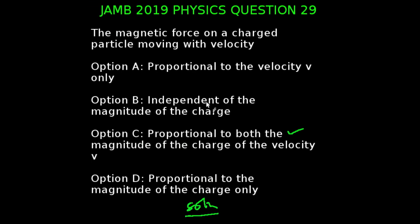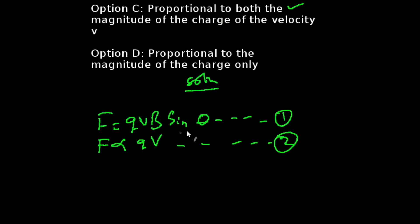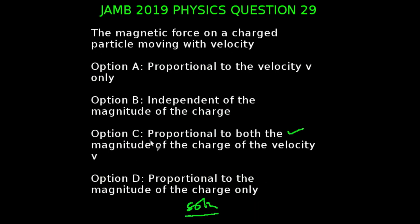Question 29 of the JAMB 2019 physics examination. The magnetic force on a charged particle moving with velocity is proportional to... The correct answer to this option is option C. It is proportional to both the magnitude of the charge and the velocity V. We can see from equation 1 that our force is proportional to our charge, velocity, and magnetic strength. And in equation 2, we have our force to be proportional to the charge and the velocity. So this corresponds to our option C, which is the force is proportional to both the magnitude of the charge and that of the velocity.